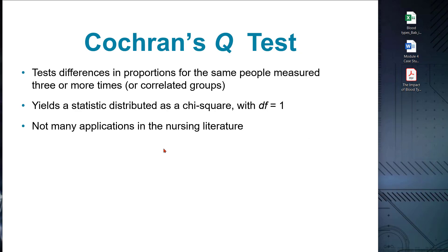Cochrane's Q-test is a non-parametric statistical test used to analyze dependent categorical data that involve multiple measurements or repeated measures on the same subjects or items. It is designed to assess whether there is a significant difference in the distribution of outcomes across multiple categories. Cochrane's Q-test is particularly useful when the data violates assumptions required for parametric tests, such as the chi-square test for dependent samples, and is commonly applied in fields including psychology and social sciences.